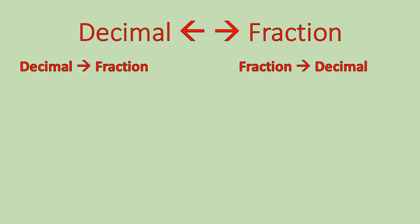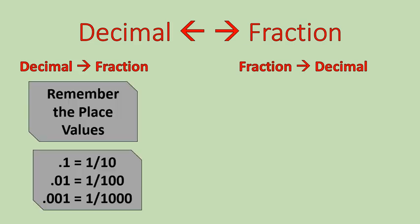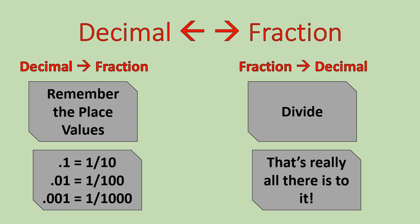The next part is decimals and fractions. When working with decimals and fractions, we need to remember place values. For example, this is the tenths place, this is the hundredths place, and this is the thousandths place. When you remember that, you'll be able to set these up really easily. When converting from a fraction to a decimal, all you need to do is divide.